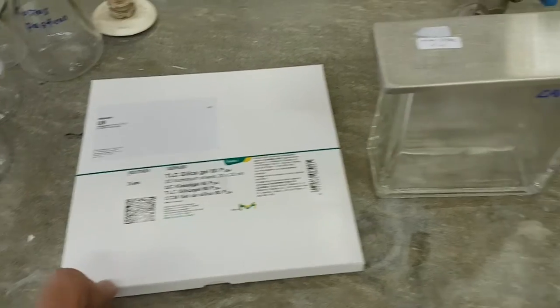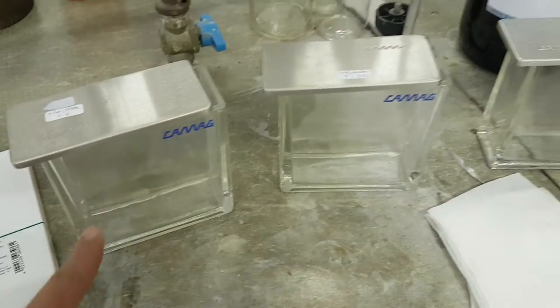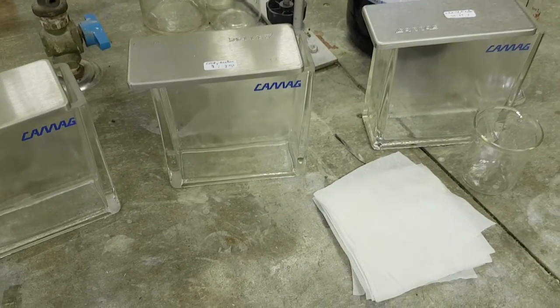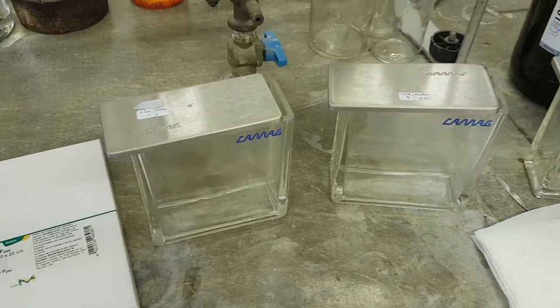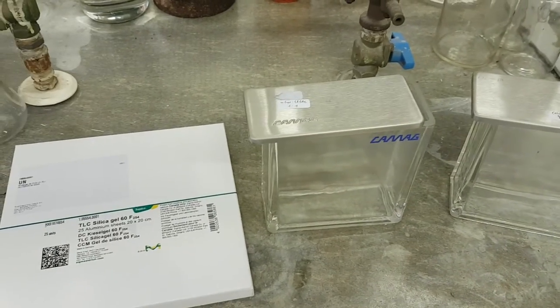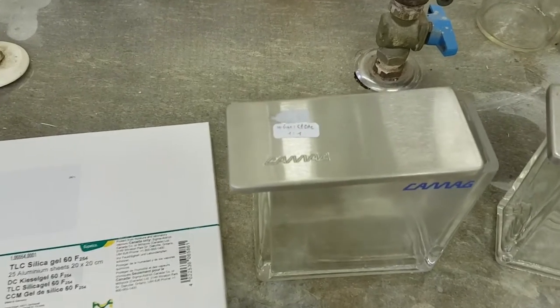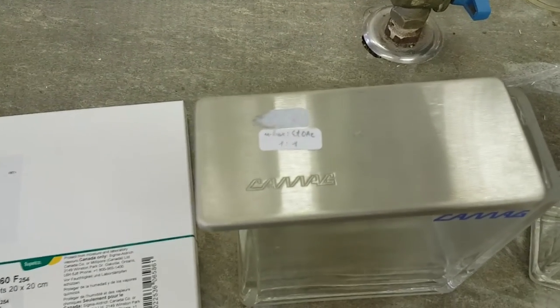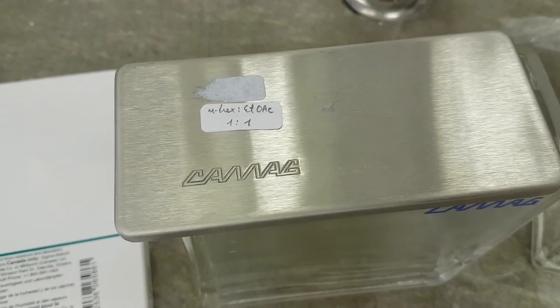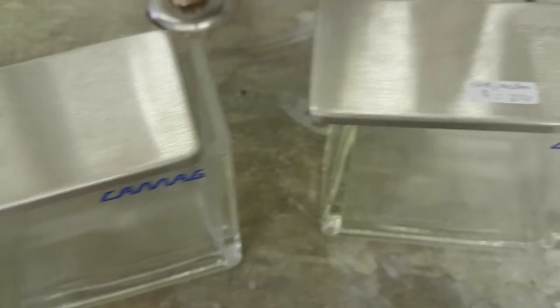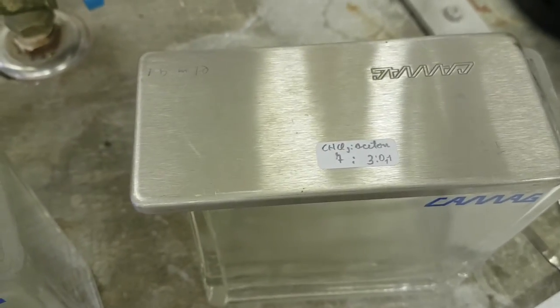Then you'll need some chambers where you will put your solvent, and you need to try different ratios of solvent. For example, here we made hexane ethyl acetate 1:1, which means 50% 50%.